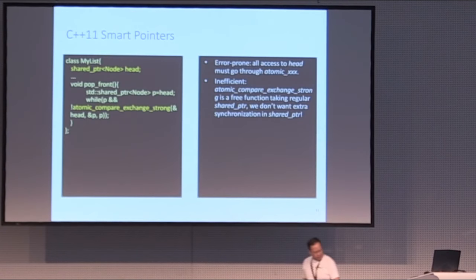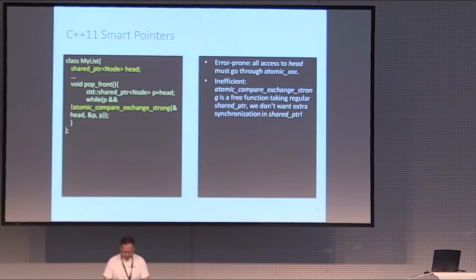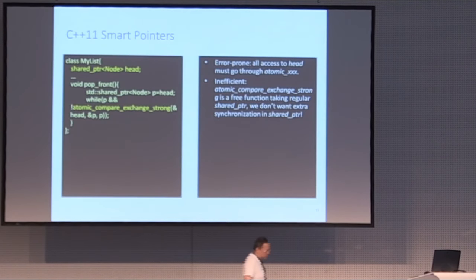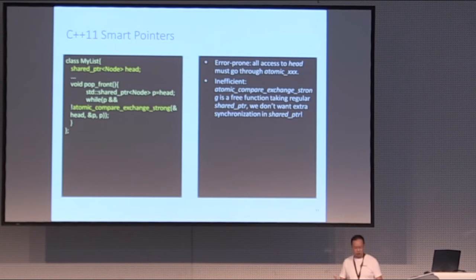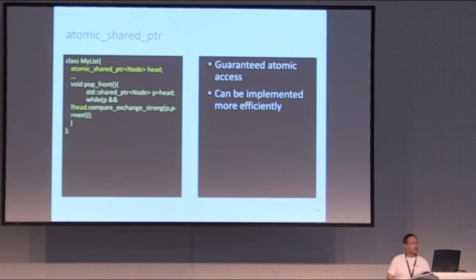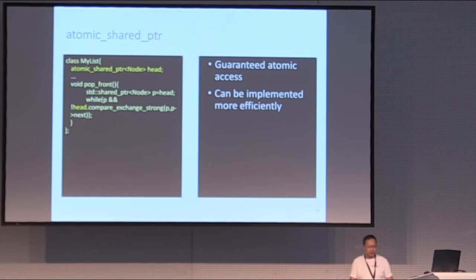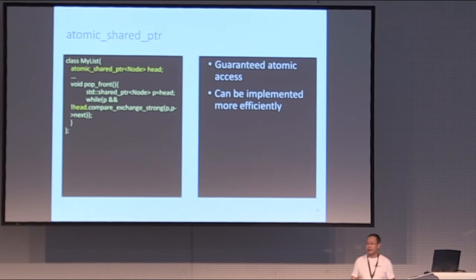This is your familiar C++11 smart pointer, generally implemented with some sort of compare-exchange on a reference-counted variable. The atomic compare-exchange is a free function taking a regular shared_ptr, and we don't want extra synchronization in the shared_ptr itself. If you have an atomic shared_ptr, then the atomic shared_ptr is a templated node on the head, and I'll show you how this guarantees atomic access and can be implemented much more efficiently.